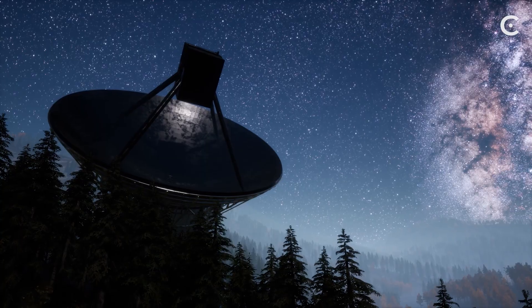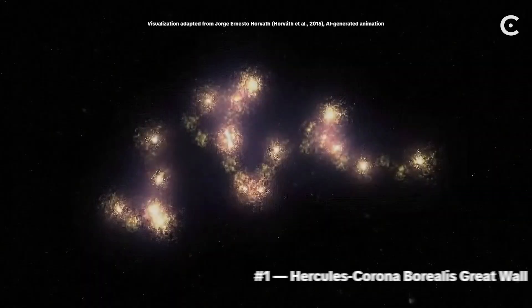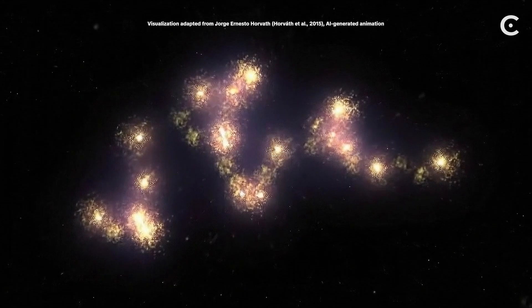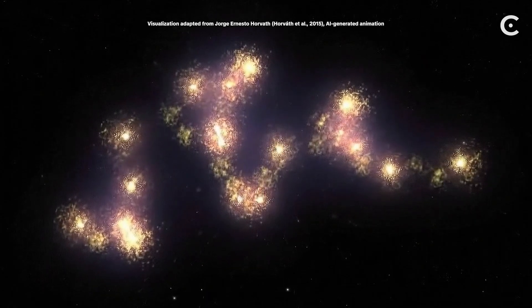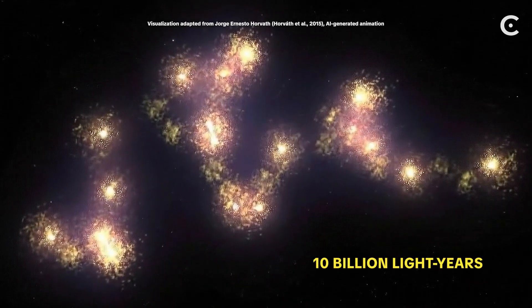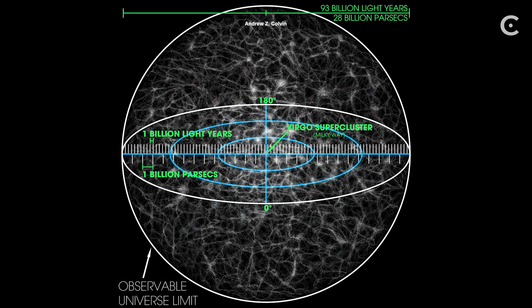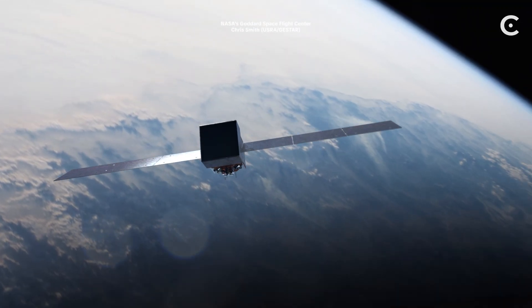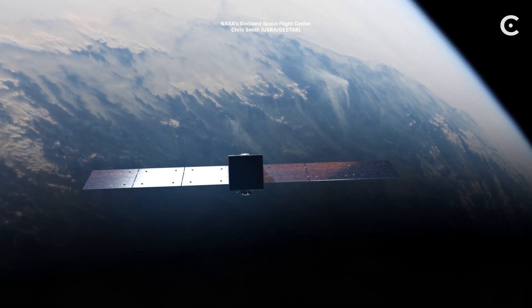Either way, there's one more structure left. And this one? Possibly the largest structure in the entire observable universe. The Hercules-Corona Borealis Great Wall. Estimated size? Up to 10 billion light years across. That's roughly 10% of the diameter of the entire observable universe contained in a single structure. Now, I have to be honest with you. This one is controversial. Really controversial.